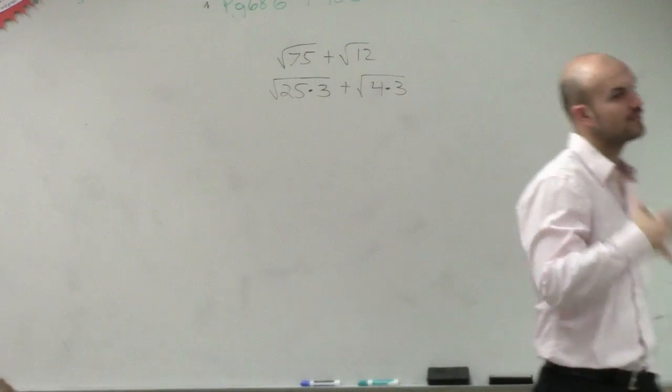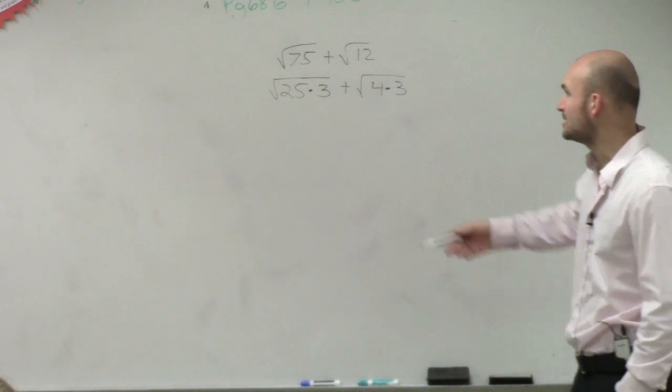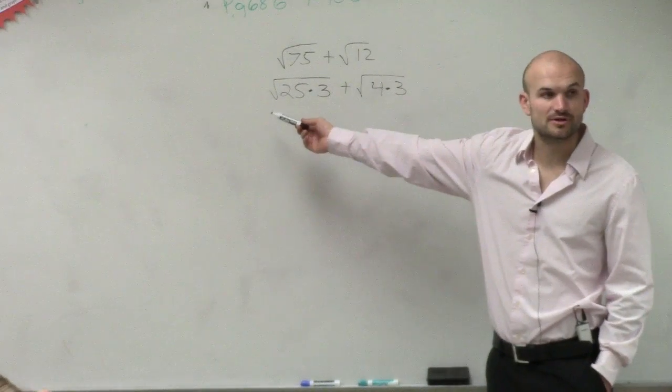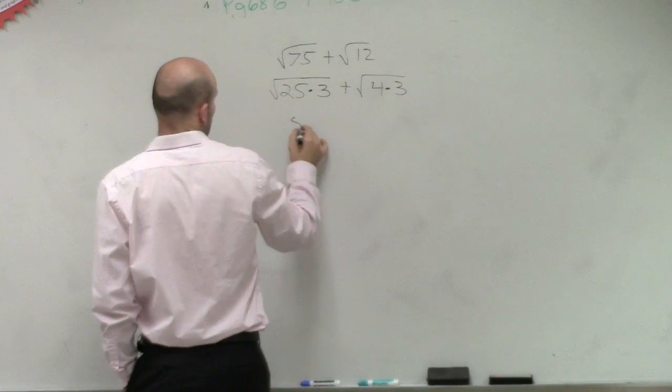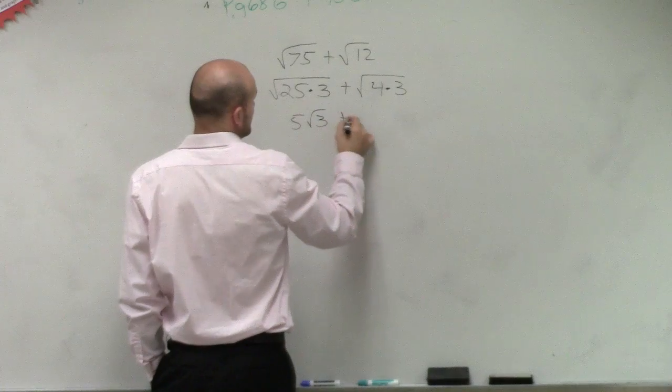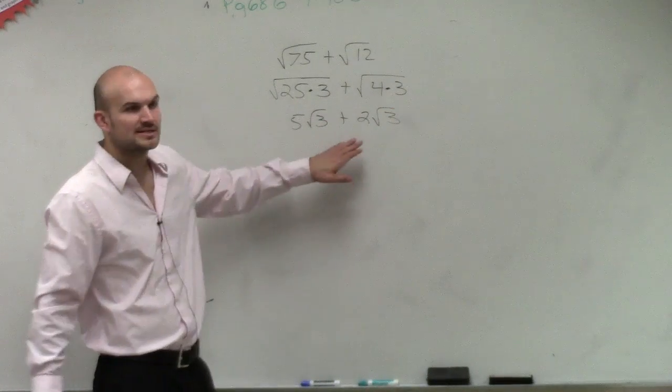So what I did was by rewriting them in this format, the reason why I chose those specific numbers is because I can take the square root of 25, and I can take the square root of 4. So by doing that, I have 5 square root of 3 plus 2 square root of 3. I can't take the square root of 3, so it remains another radical.